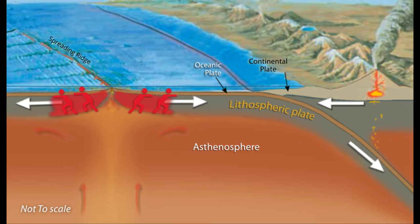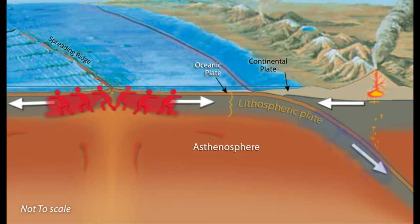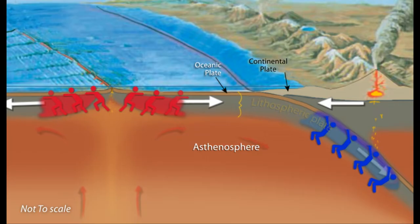This system pushes young hot plates away from spreading ridges and pulls old cold plates down into subduction zones.